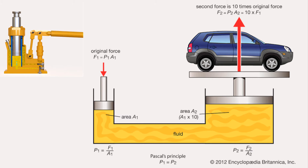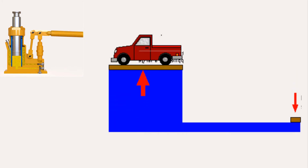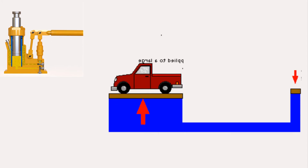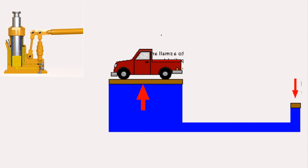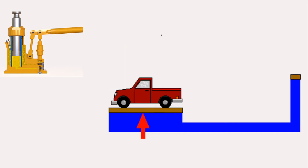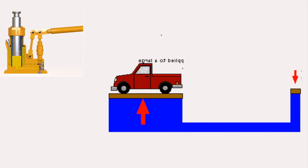Pressure is equal to the force divided by the area on which it acts. According to Pascal's principle, in a hydraulic system, a pressure exerted on a piston produces an equal increase in pressure on another piston in the system. If the second piston has an area ten times that of the first, the force on the second piston is ten times greater, though the pressure is the same as that on the first piston.